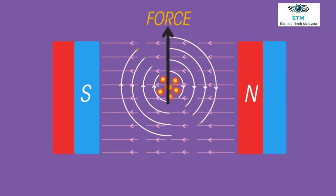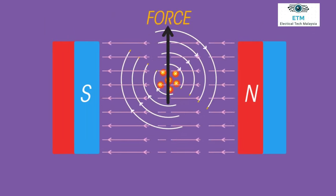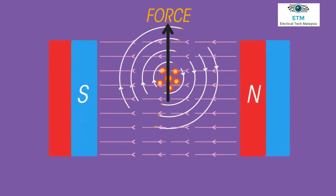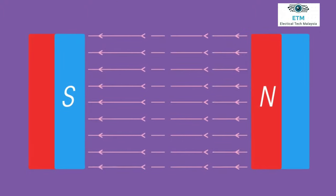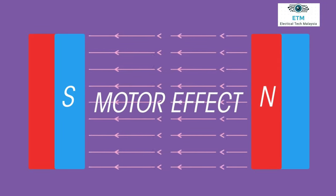The wire is pushed away from the strong field towards the weak one. So the wire will be pushed vertically upwards out of the magnetic field. This is the motor effect.